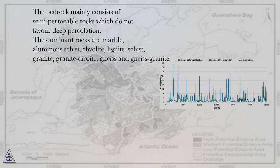The bedrock mainly consists of semi-permeable rocks which do not favor deep percolation. The dominant rocks are marble, aluminous schist, rhyolite, lignite, schist, granite, granite diorite, gneiss, and gneiss granite.